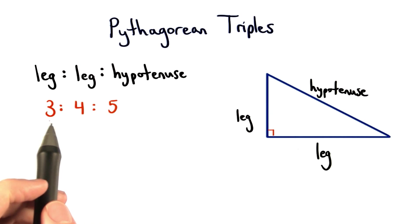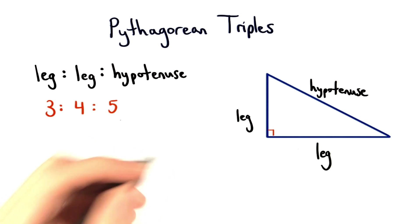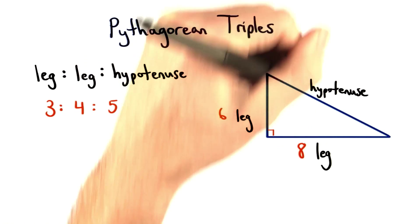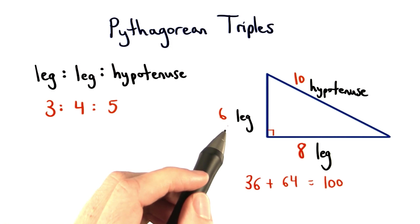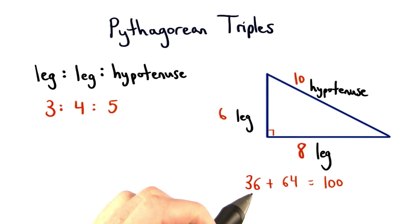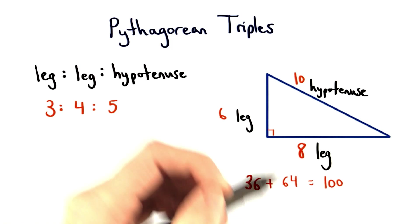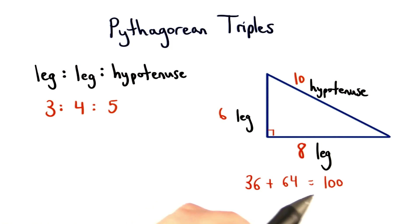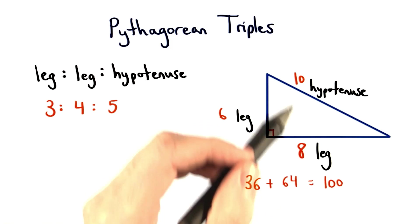So if I multiply each of these by 2, I could also have a 6, 8, 10 right triangle. We know this is a right triangle since 6 squared is 36, 8 squared is 64, and 10 squared is 100. A squared plus B squared equals C squared.